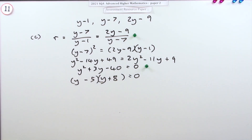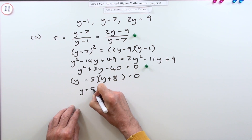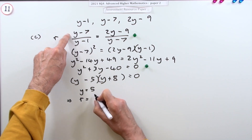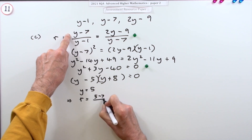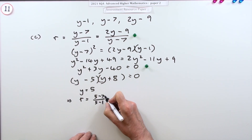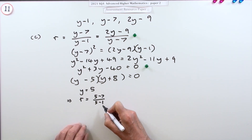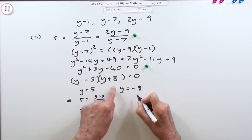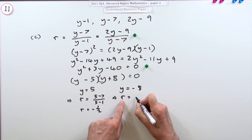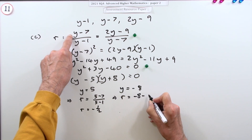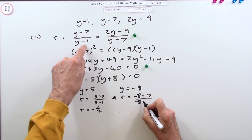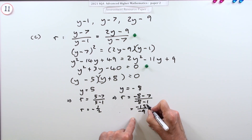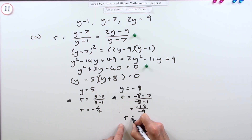Solving the quadratic gives y equals 5 or y equals negative 8. If y equals 5, the corresponding common ratio using (y minus 7)/(y minus 1) is (5 minus 7)/(5 minus 1) = negative 2/4 = negative one half. If y equals negative 8, the ratio is (negative 8 minus 7)/(negative 8 minus 1) = negative 15 over negative 9 = 5/3. So r equals negative 1/2 or r equals 5/3.